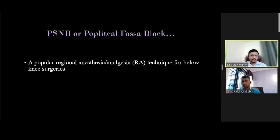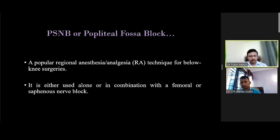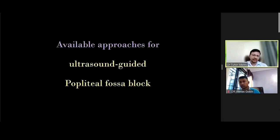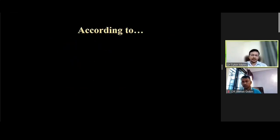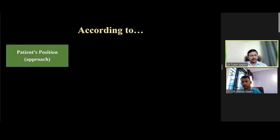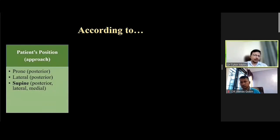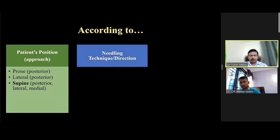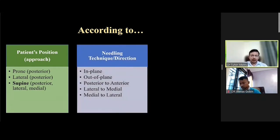Popliteal sciatic nerve block, or popliteal fossa block, is a widely practiced regional anesthesia or analgesia technique for below-knee surgeries. It is either used alone or in combination with a femoral or saphenous nerve block. The available approaches for ultrasound-guided popliteal fossa blocks vary by patient position — prone or lateral via posterior approach, and in supine position via posterior, lateral, or medial approach — and by needling technique: in-plane, out-of-plane, lateral to medial, medial to lateral, or posterior to anterior.